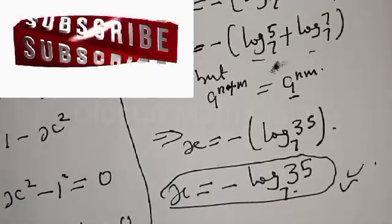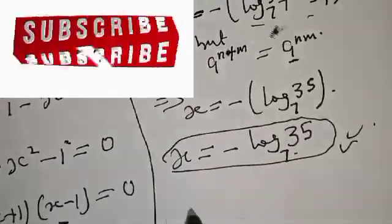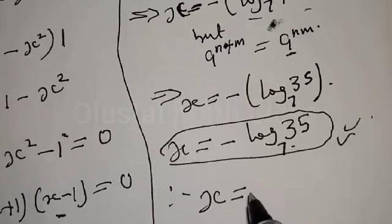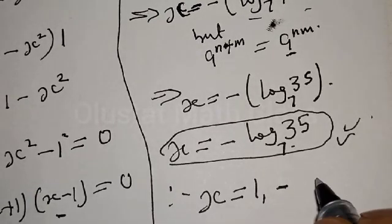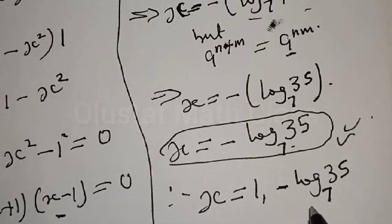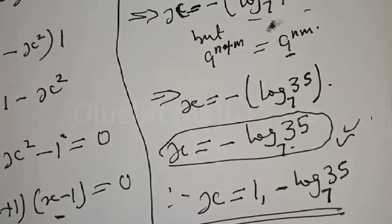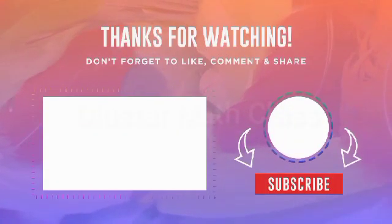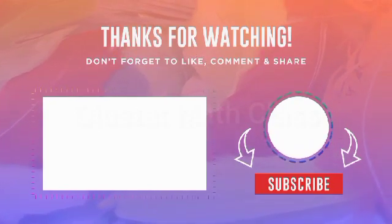Therefore the values of x are: x equals 1 or x equals minus log 35 base 7. If you have enjoyed the class, please don't forget to like, share, comment and subscribe. Thank you.